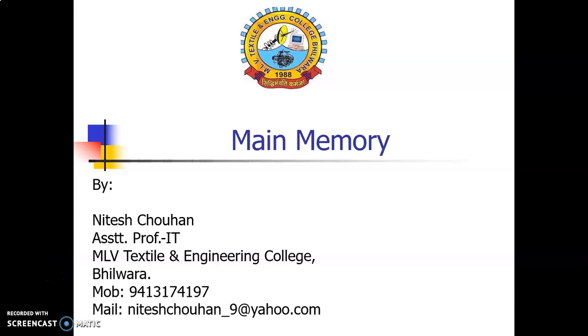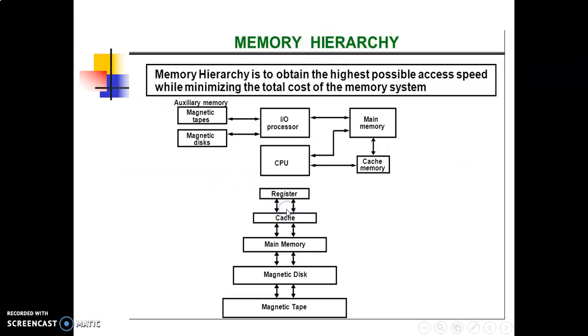Hello everyone, in this lecture I am going to explain about the main memory. As we know, the main memory is the central storage unit in a computer system and it is relatively large and fast memory used to store programs and data during computer operation. This is the hierarchy from which we can see that the objective is to obtain the highest possible access speed while minimizing the total cost of the memory system.